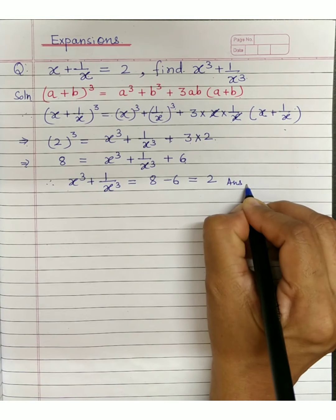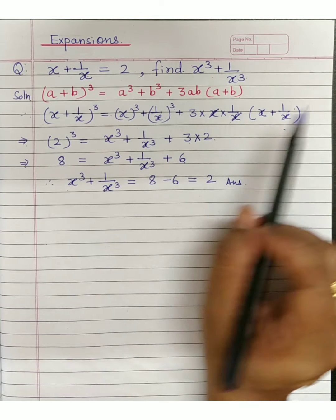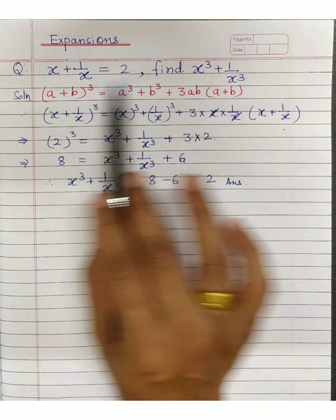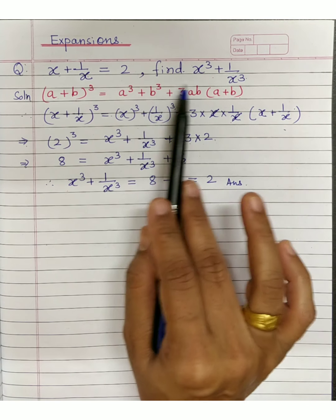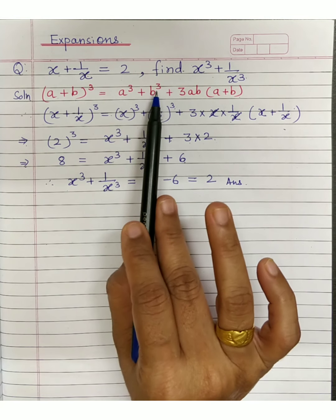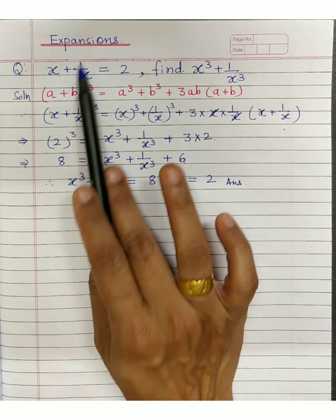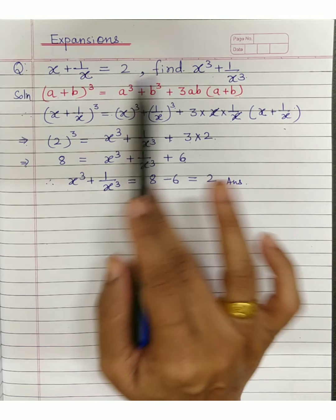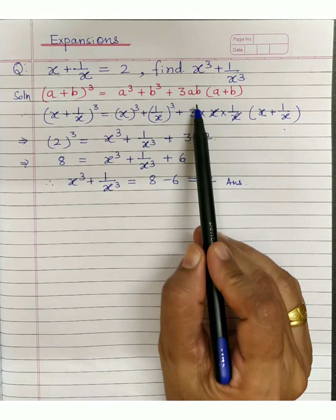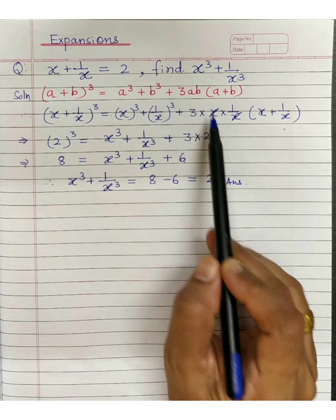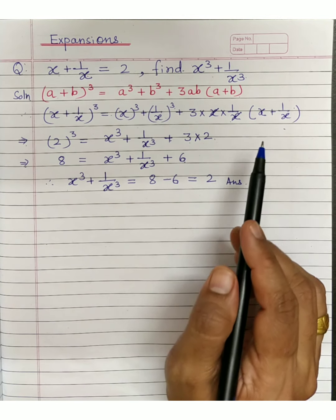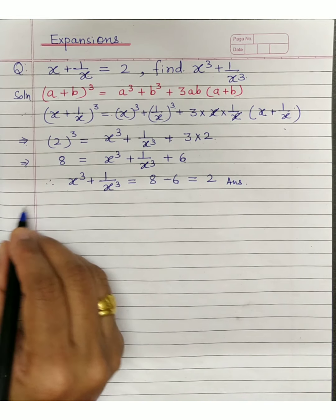Importantly, what you have learned here is: look at what is given, think of the appropriate formula, and identify the terms. a plus b and a cube plus b cube relate to x plus 1 upon x and x cube plus 1 upon x cube. The ab term cancels because x into 1 upon x equals 1.